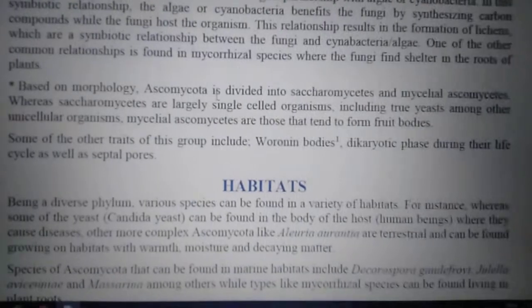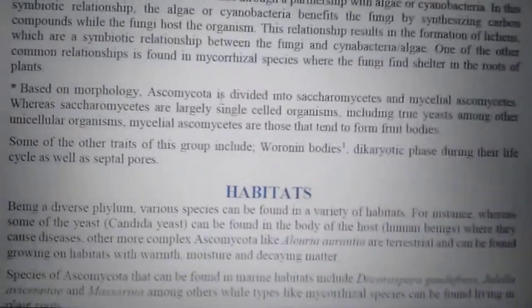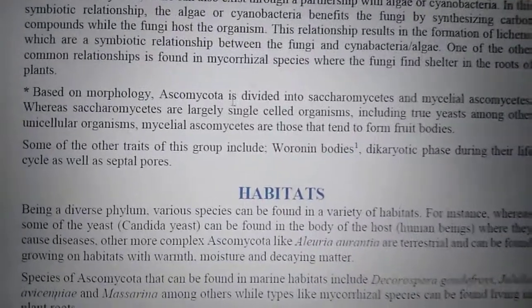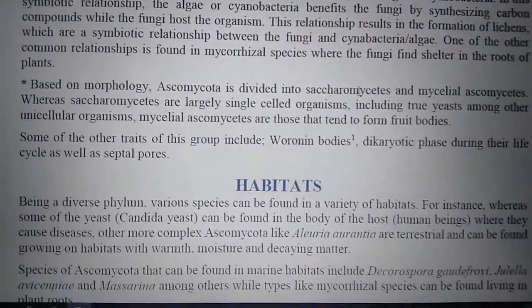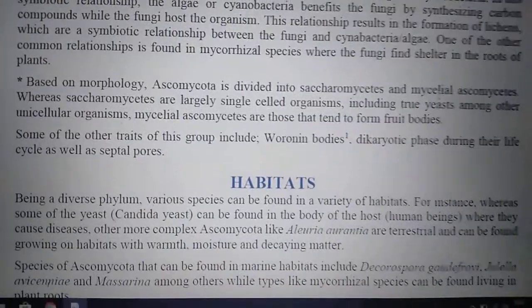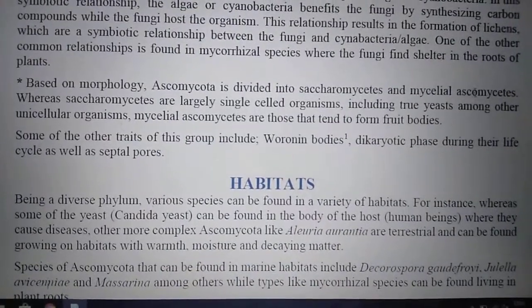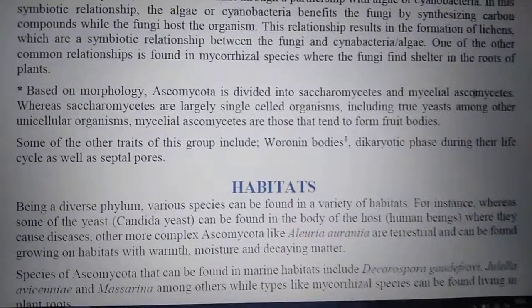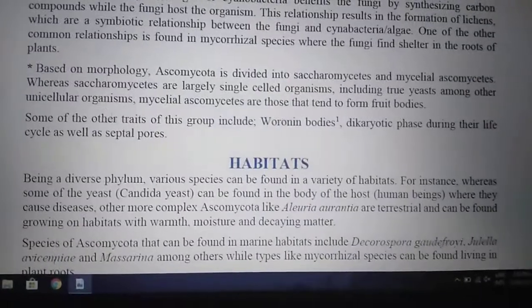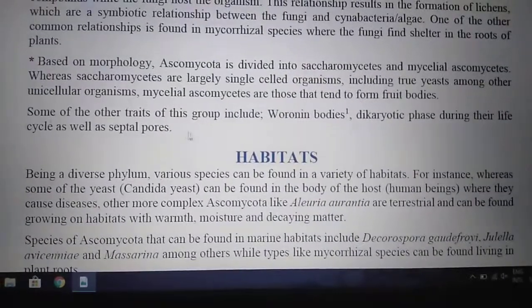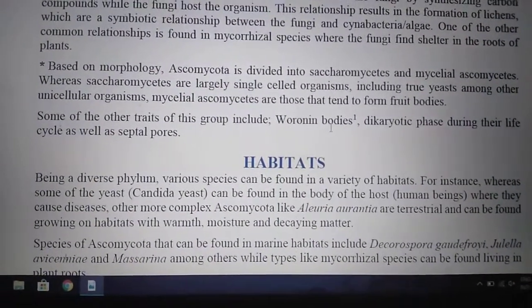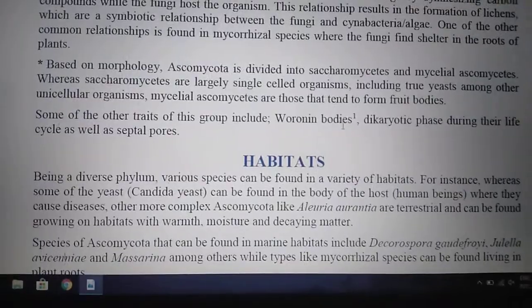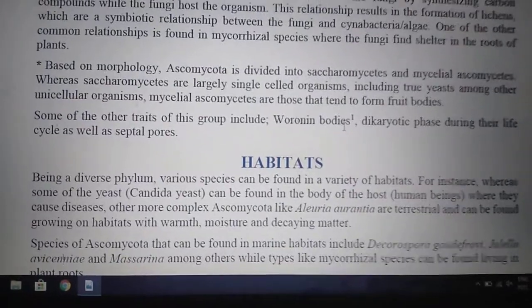Based on morphology, Ascomycota is divided into Saccharomycetes, which include yeasts, and mycelial Ascomycetes, which are multicellular. Some of the traits of this group include Woronin bodies, which are specialized structures found in Ascomycota.